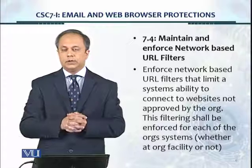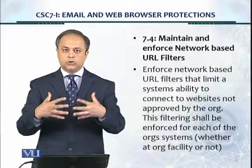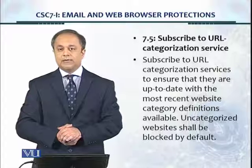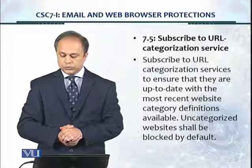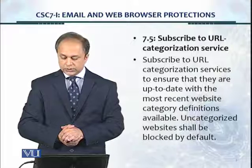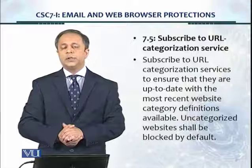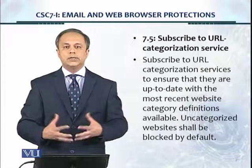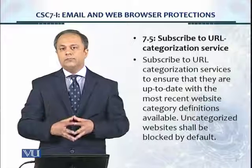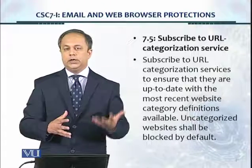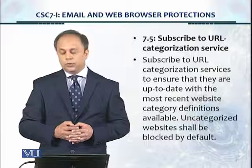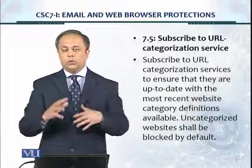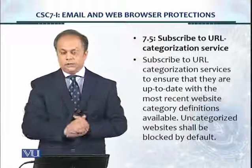This is a very important activity which protects the organization from getting attacked by malware. Control 7.5: subscribe to URL categorization service. Subscribe to URL categorization services to ensure they are up-to-date with the most recent website category definitions available. Uncategorized websites shall be blocked by default. This can be performed in an automated manner by a web filtering solution, which could be part of your next-generation firewall, or you may purchase a separate leading web filtering product in software or hardware form. If you're looking at open source, you can also install a URL categorization service that enables you to restrict websites by category, as this control states.